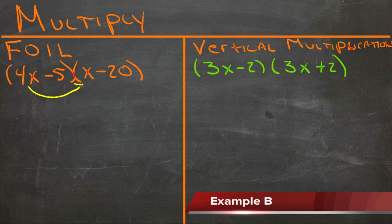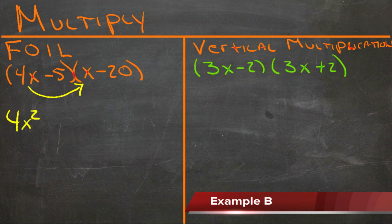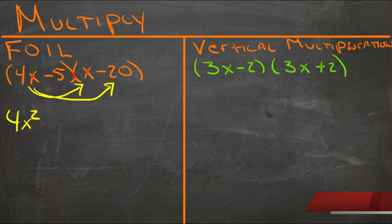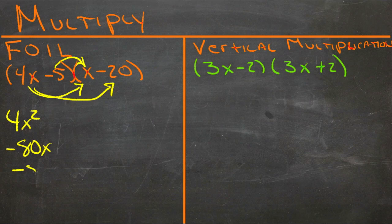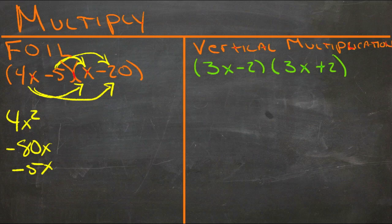So we have our first two terms. 4x times x is 4x squared. And our outer two terms. 4x times negative 20 is negative 80x. And our inner two terms. Negative 5 times x is negative 5x.